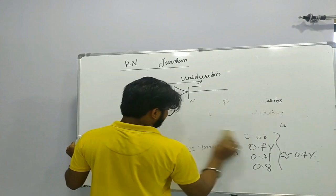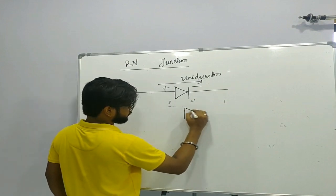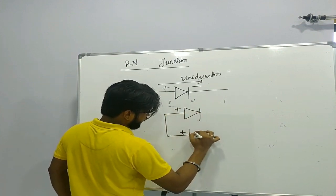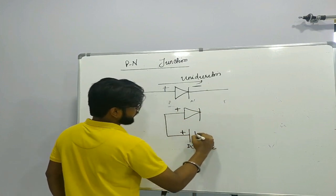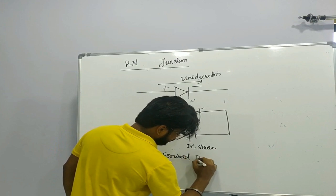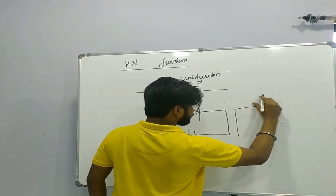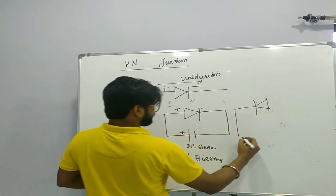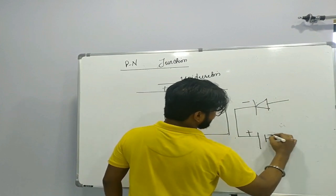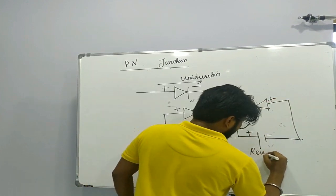In circuit form, a PN junction or diode is represented with its positive terminal connected to the positive end of a DC source and its negative terminal connected to the negative terminal — this is forward biasing. In the other case, the positive end of the diode is connected to the negative terminal of the battery and the negative terminal of the battery is connected to the positive end of the diode — this is called reverse biasing.